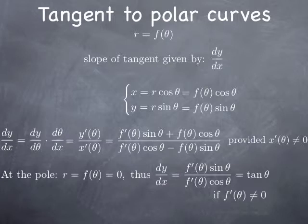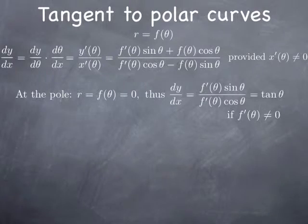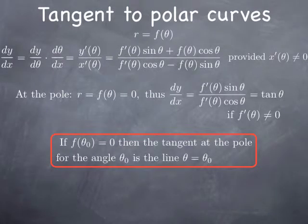The condition that f prime of theta is not zero is not really important, because if it is, we look at the limit as theta is approaching the relevant angle. In the limit, we're still going to be able to simplify by f prime of theta, and therefore we're still going to have tangent of the angle. So that means that if for a particular value of the parameter theta equal theta zero, r is zero — in other words, if we're back at the pole — then the tangent at the pole for that angle is the line theta equal theta zero, because this line has slope tangent of theta zero.